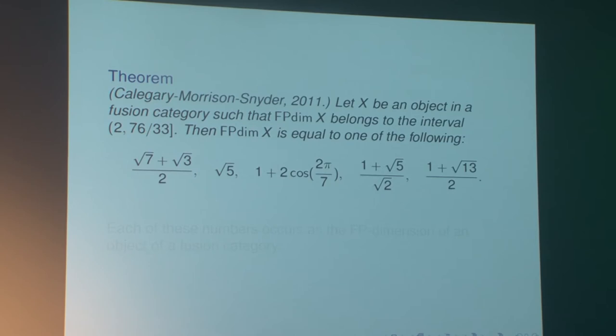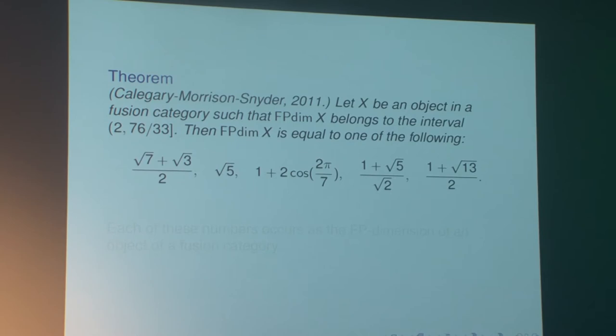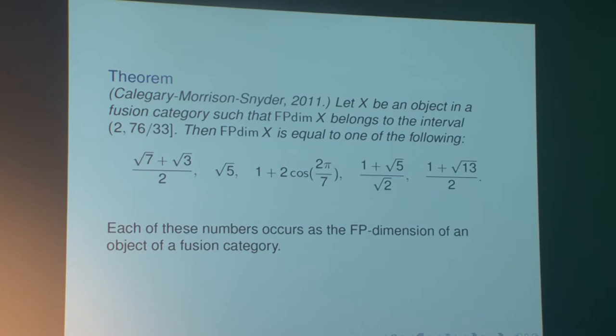A very nice result on the possible values of the Frobenius-Perron dimension of objects in a fusion category is due to Calegari, Morrison, and Snyder: in the interval between 2 and 76/33, the Frobenius-Perron dimension of an object in a fusion category can only equal one of a specific list of numbers. Moreover, in that paper they provided examples realizing all these possibilities, some of which are due to Ostrik.